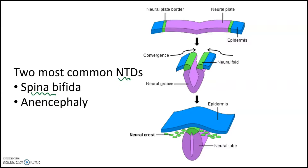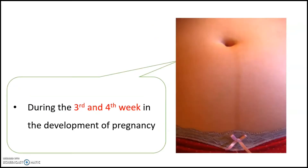So what is a neural tube? In a normal embryo, neural tube closure is completed during one month of pregnancy. A neural tube defect occurs when the neural tube does not close properly. Therefore, spina bifida is due to the neural tube defect during the third and fourth week in the development of pregnancy.